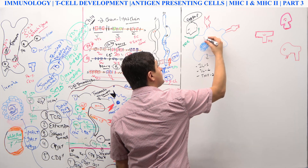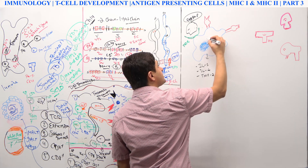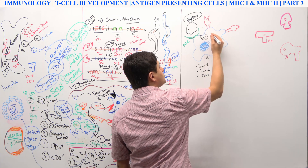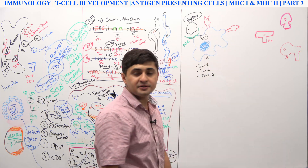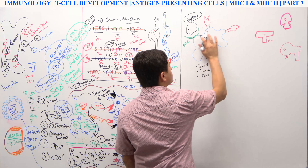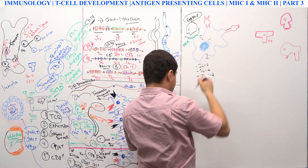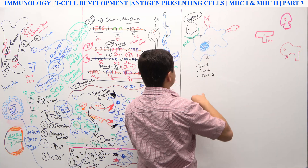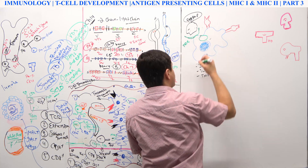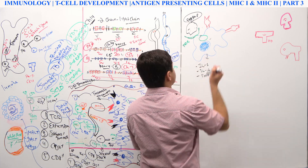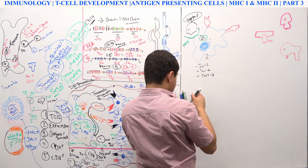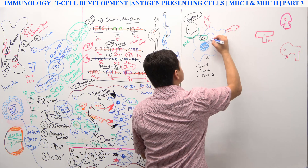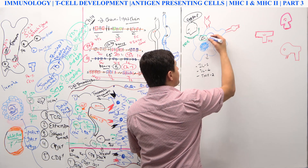The macrophage will take the pathogen inside and put it in a vesicle — an endosome — and break it down into pieces. The lysosome will fuse with the endosome and release hydrolytic enzymes, breaking this bacteria into pieces. So now you have a bunch of pieces of this microbe.